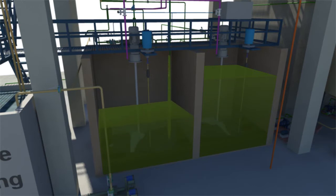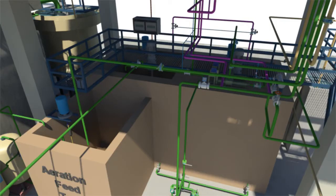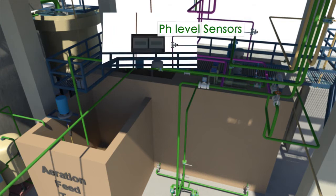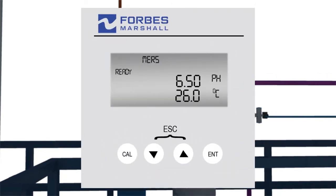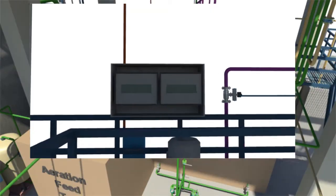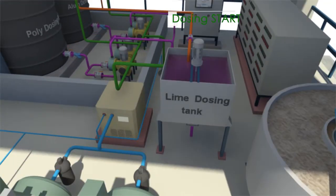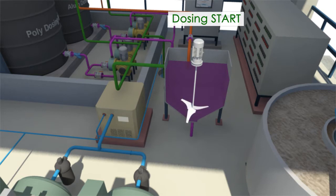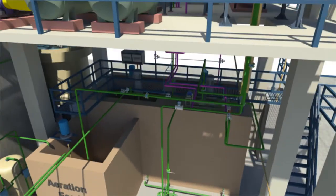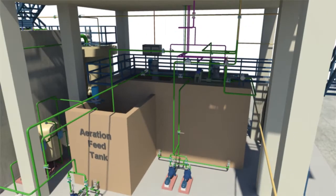Lime and alum dosing will start based on the pH level sensed by pH sensors. The lime dosing pump will operate and regulate the flow of lime solution automatically.